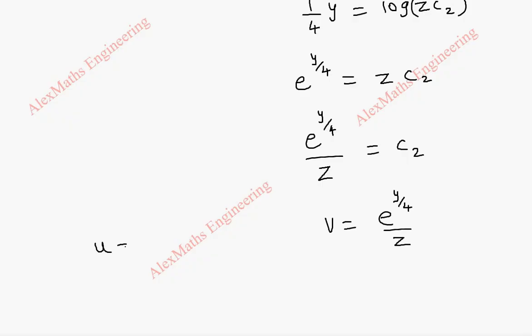And u already we got as x minus y. So f of u comma v, which is x minus y and e power y by 4 by z, equal to 0. So it is possible to give the solution in more than one form.